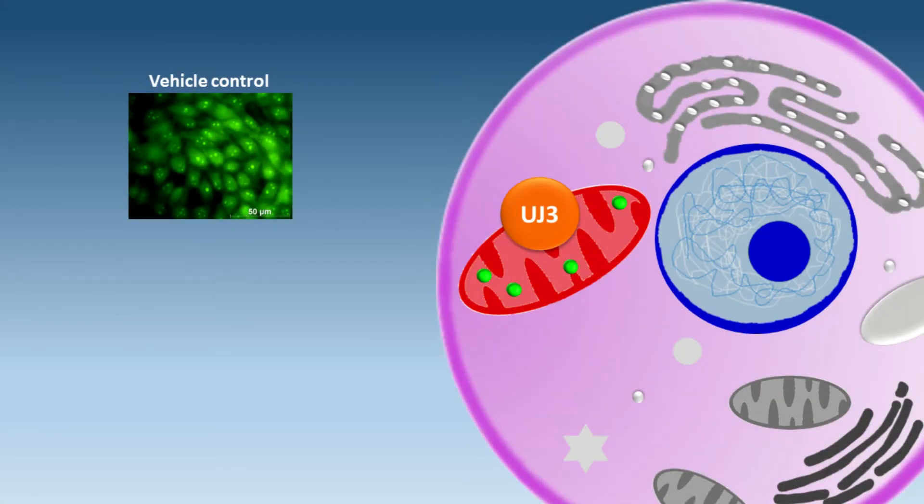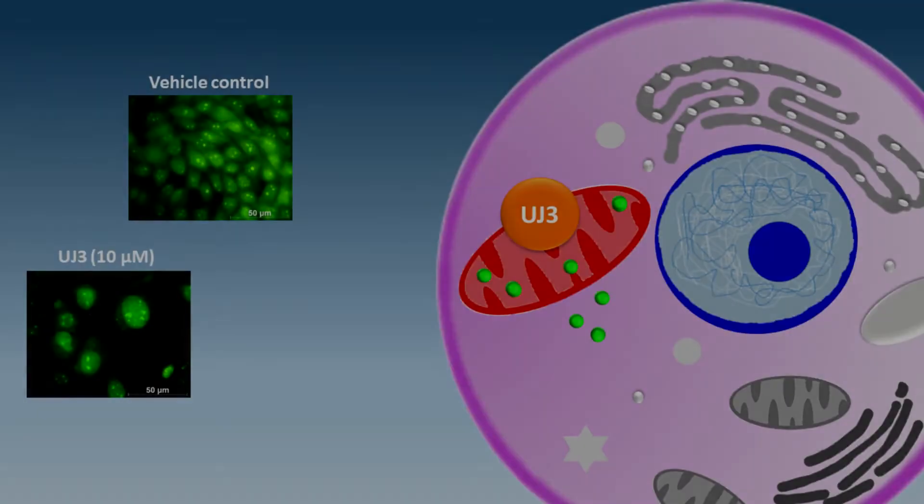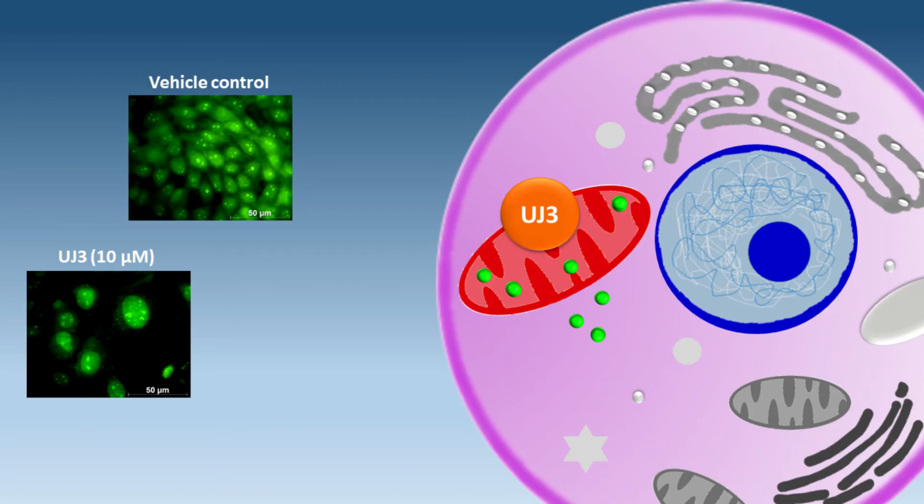On the left, in the vehicle control image, we see cytochrome C lighting up green, inside the mitochondria of live cancer cells. The UJ3 image shows how few active mitochondria with cytochrome C inside them are left after treatment with 10 micromolar of UJ3.